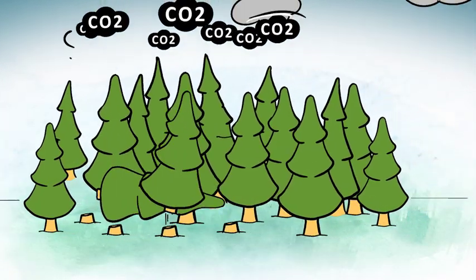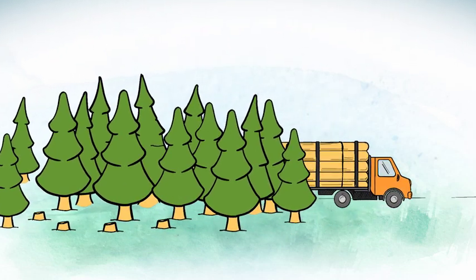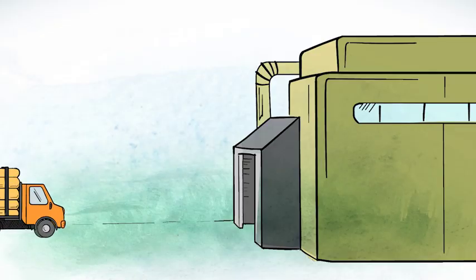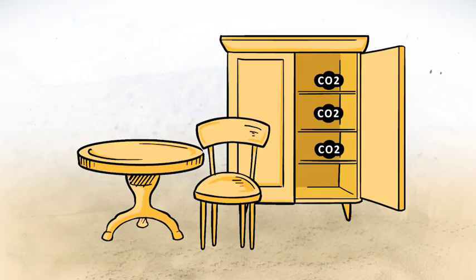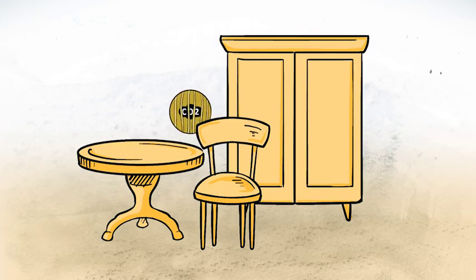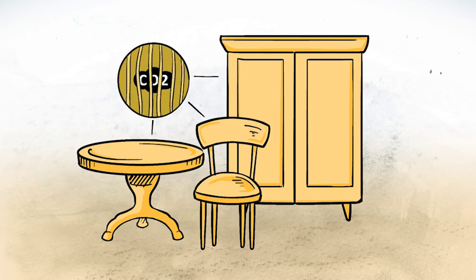What happens to the carbon if we harvest wood from those forests? Well, if the wood is used, for example for houses or furniture, the carbon stays locked in. That means it is not released into the atmosphere for a long time.